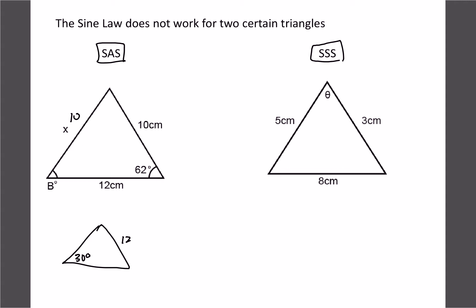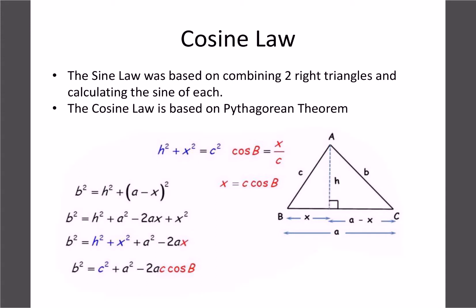The other scenario that doesn't work is side-side-side, where we have all three sides but no angles. If we tried sine law here, we'd have sine of the unknown angle over 8, then sine of some other angle over 5 or 3 — two unknowns every time. So we need another method. The cosine law is actually based on the Pythagorean theorem.